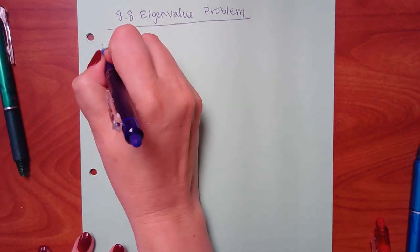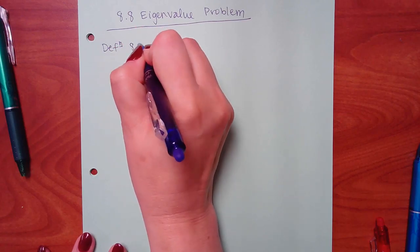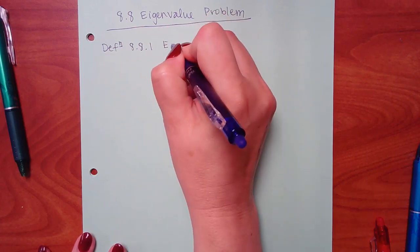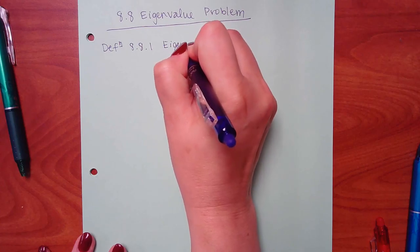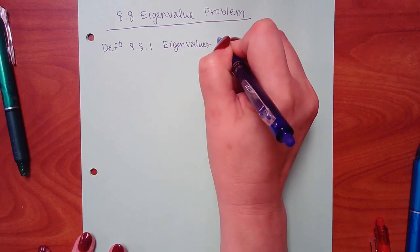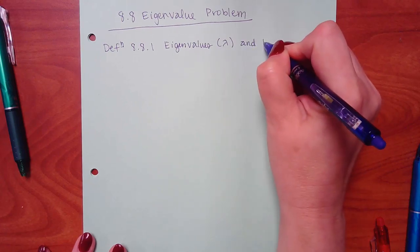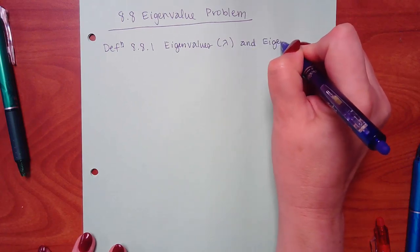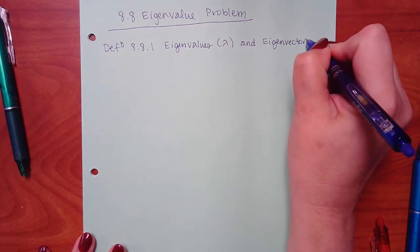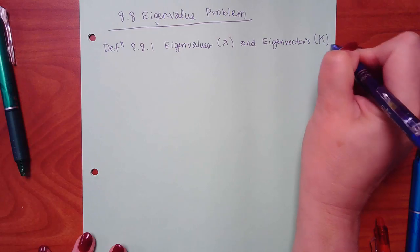We're on my writing. Definition 8.8.1 is going to talk about two different things: eigenvalues, which are the lambdas, and eigenvectors. I use a capital K for my vectors.